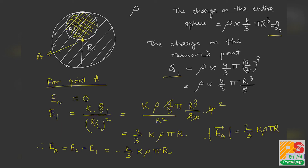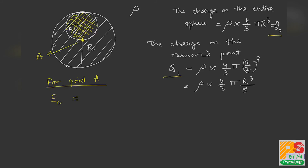The negative sign in E_remainder = E0 − E1 indicates direction. The intensity at A due to the removed sphere is radially outward, and the negative sign indicates the final intensity due to the remainder is in the opposite direction.